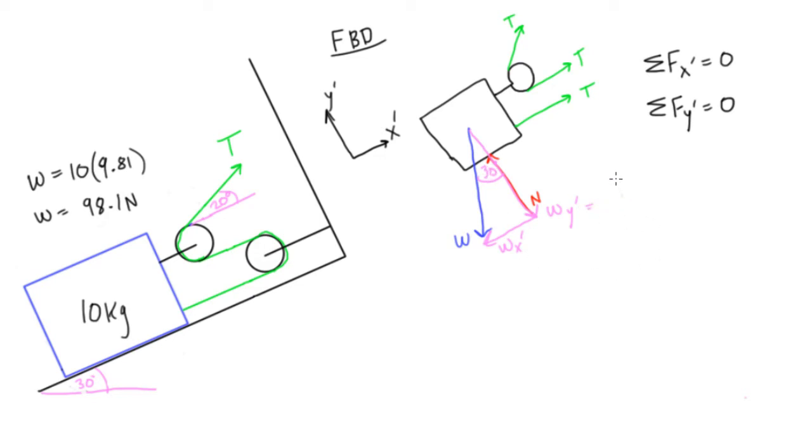Anyways, moving on, this is going to be w y prime, so this will be w times cos 30. Okay, and w x prime here will be w sine 30.